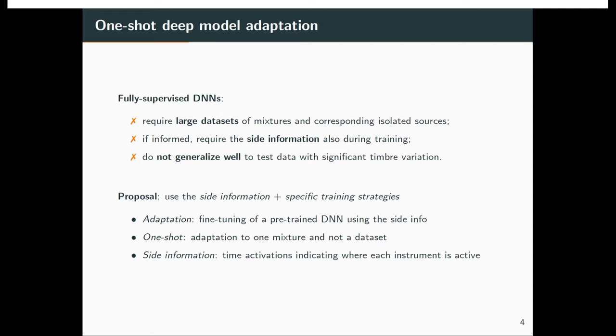We therefore investigated whether it is possible to inform a source separation model based on deep learning using the time activation of sources provided by the user to fine tune it to one specific test mixture. We underline that the adaptation is one shot as it acts on the target sum instance only and not on a new dataset as most fine tuning strategies do.